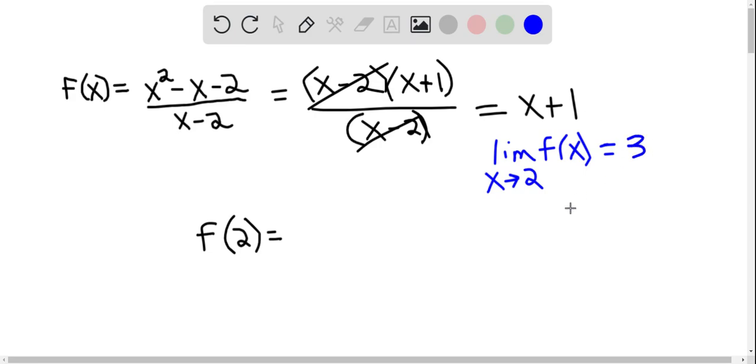So if we want to define f when x is 2 so that the function is continuous, f(2) has to be the limit of f(x) as x approaches 2. That's what we mean by continuity. The limit of the function as x approaches 2 has to equal the value of the function at 2. So since the limit of the function is 3, we're going to define f(2) to be 3.